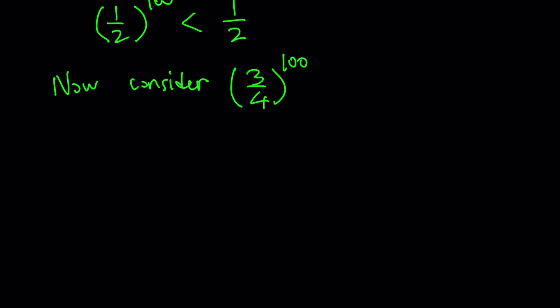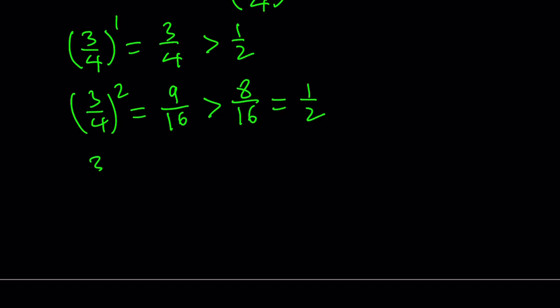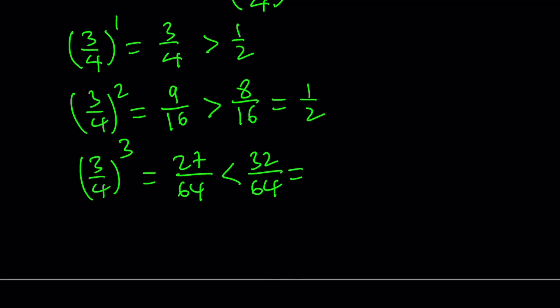I'm not comparing 3 fourths to the power of 100 to 3 fourths, but more like I want to compare it to 1 half. If you raise 3 fourths to the first power you get the same number, and this is greater than 1 half. If you raise 3 fourths to the second power, that's 9 over 16, and 9 over 16 is greater than 8 over 16, which is 1 half. So the second power of 3 fourths is also greater than 1 half. When you raise it to the third power, you get 27 out of 64, which is less than 32 over 64, which is 1 half. So we found the smallest integer power of 3 fourths that is less than 1 half.